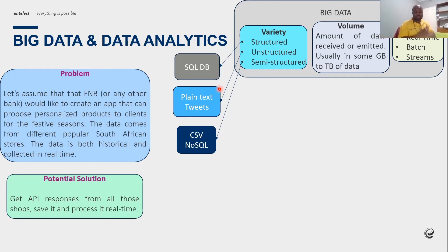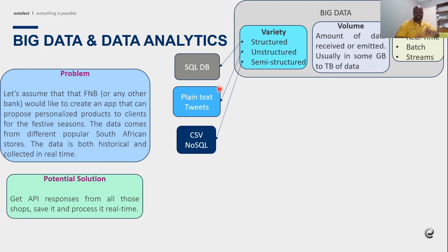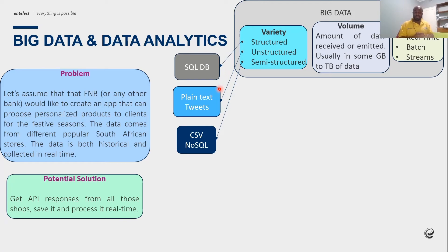Structured data is your normal SQL or Postgres database with columns and rows, a schema, an index, and policies. Unstructured data includes plain text, tweets, and images — things that don't use rows and columns in the SQL way. Then you have semi-structured data like CSV or JSON files, which don't enforce a schema but do maintain some ordering in the way they store data.